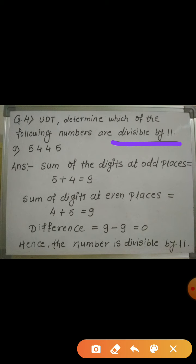Let us first recall the divisibility rule for 11. A number is said to be divisible by 11 when the difference between the sum of the digits at odd places and the sum of the digits at even places is either 0 or 11.